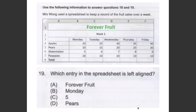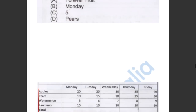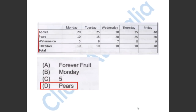This question asked us which entry in the spreadsheet is left aligned. As you can see in this Excel document, the word 'pairs' is left aligned. So the answer has to be D.